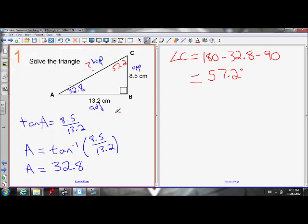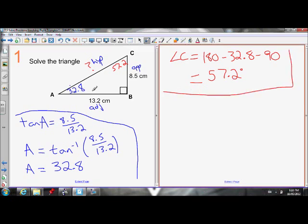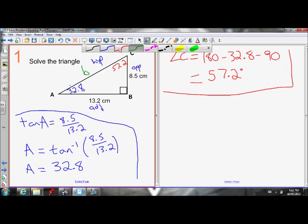Okay, so I figured out angle A right here. I have figured out angle C. All I have left to figure out is my side B. So I want to figure out side B. There's a few different ways I could do this. I could use either of these as my reference angle, but since I've already labeled my triangle based on 32.8 being my reference angle, I'm going to use that as my reference angle.